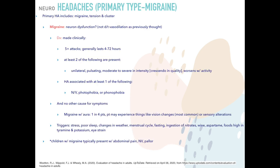Next up, headaches — an important topic you'll definitely see on boards. Headaches are divided into primary and secondary. Primary headaches include migraines, tension headaches, and cluster headaches. Secondary headaches are secondary to something else occurring. For migraines, it was originally thought to be related to vasodilation, but research now suggests it may be related to neuron dysfunction. Migraines are diagnosed clinically: five or more attacks generally lasting between 4 and 72 hours.